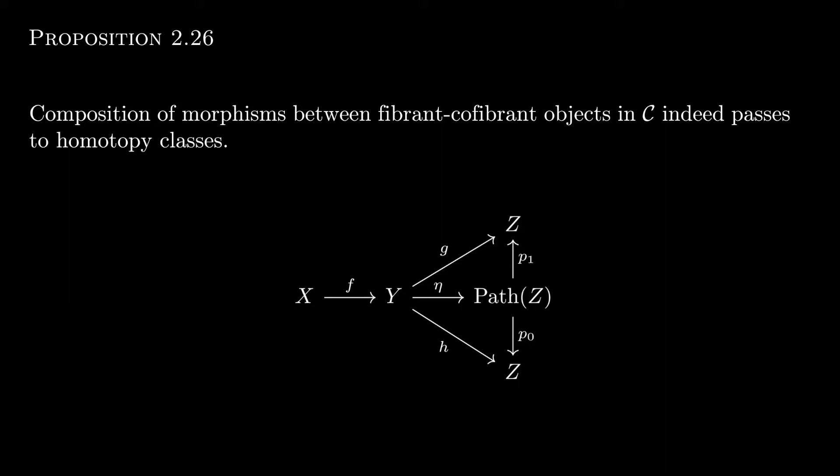All objects are assumed to be fibrant and cofibrant. Since the notions of right and left homotopy coincide, we can make the following diagram to exhibit the homotopy by assumption from g to h, and this exhibits the homotopy from fg to fh as well. This shows the case of pre-composition, but for post-composition we argue dually, drawing the diagram with left homotopy instead.